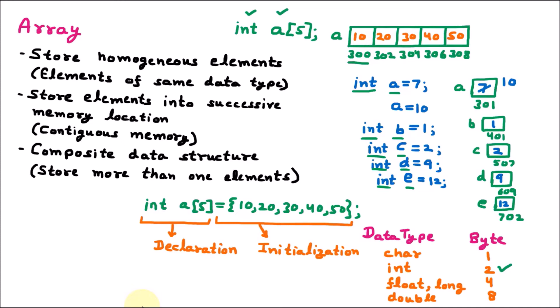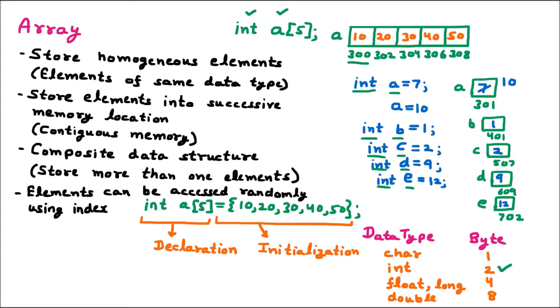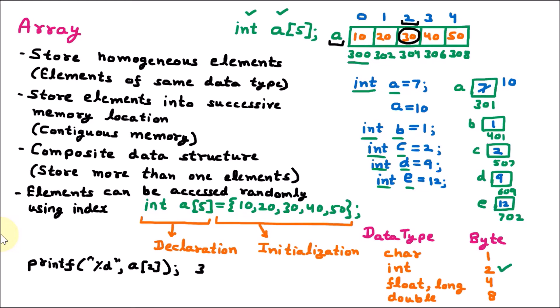Array elements can be accessed randomly using indices. Since the array is stored in consecutive memory, the index starts at 0 and goes up: 0, 1, 2, 3, 4. To access an element, we use the array name and its index. For example, to print the element at index 2 (which is 30), we write: printf("%d", a[2]). The output will be 30. This is how we access a random element from the array.